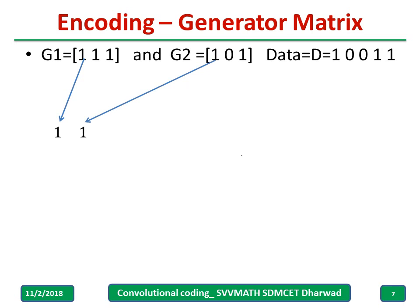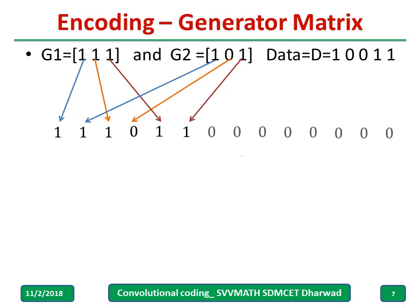Write the second bit of G1 and second bit of G2 — that is 1 followed by 0. Then write the third bit of G1 and third bit of G2. If you have G1, G2, G3, you write first bits of G1, G2, G3, then second bits of G1, G2, G3, and so on. Then append zeros for the remaining columns — we need 14 columns total.